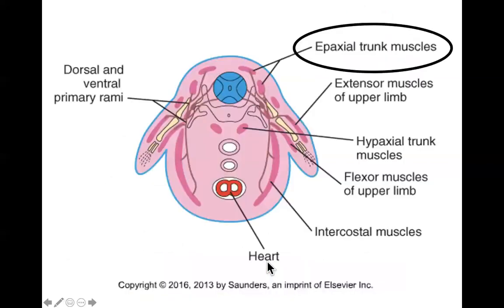Also important to note is that as the somites develop, the myotome region splits into two segments: a dorsal segment called the epaxial segment, and a ventral segment called the hypaxial segment. This matters because when the motor nerves are sent out, they also split into a primary dorsal and a primary ventral ramus. The ventral ramus innervates all of the hypaxial division muscles, and the dorsal ramus innervates the epaxial muscles. That's going to be on the quiz.